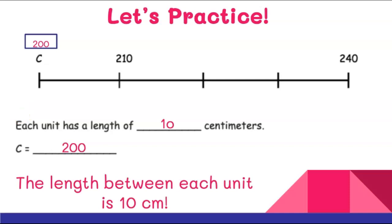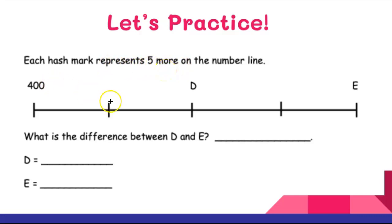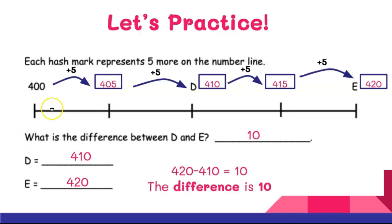The second type of problem is a little different. Each hash mark represents 5 or more on the number line, so you decide whether to jump by fives or tens. You'll label all your hash marks and find the difference between them. Let's practice. I'll jump by fives starting at 400: 400, 405, 410, 415, 420. I was able to add fives and label the entire number line.